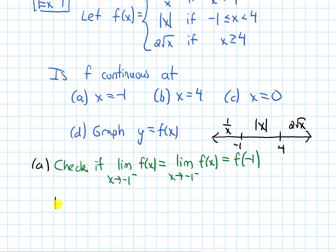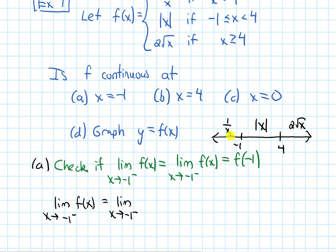Let's do the limit as x approaches negative 1 from the left. If we're approaching negative 1 from the left, we are on that side of negative 1 getting closer and closer to it. Over there, our function is 1 over x. So I'll use 1 over x and plug in negative 1. That gives me negative 1.